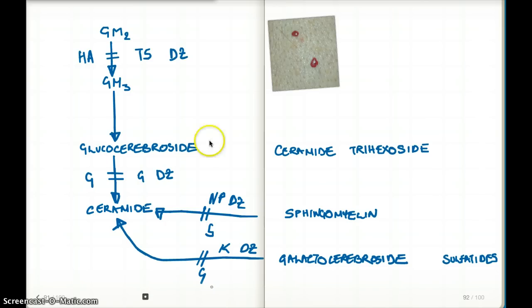We also have galactosidase. From ceramide trihexacide, this pathway is mediated by galactosidase. When this enzyme is inhibited, we have Fabry's disease.